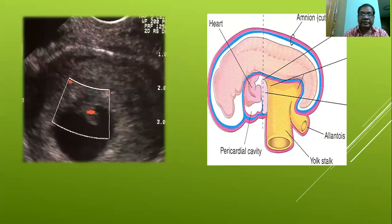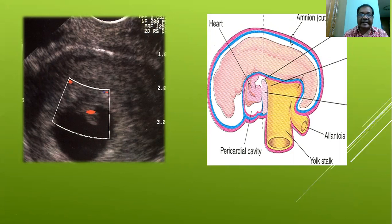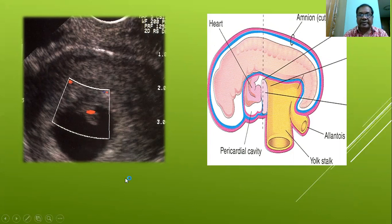At around the 22nd to 24th day, the movement of blood in the heart tube can be visualized by Doppler ultrasound.